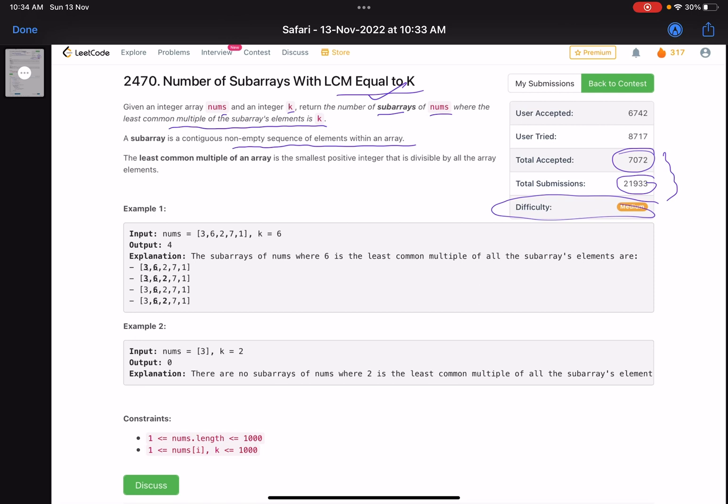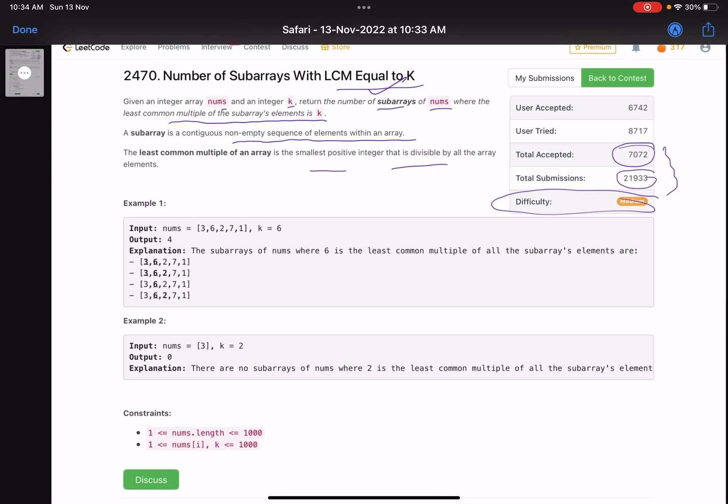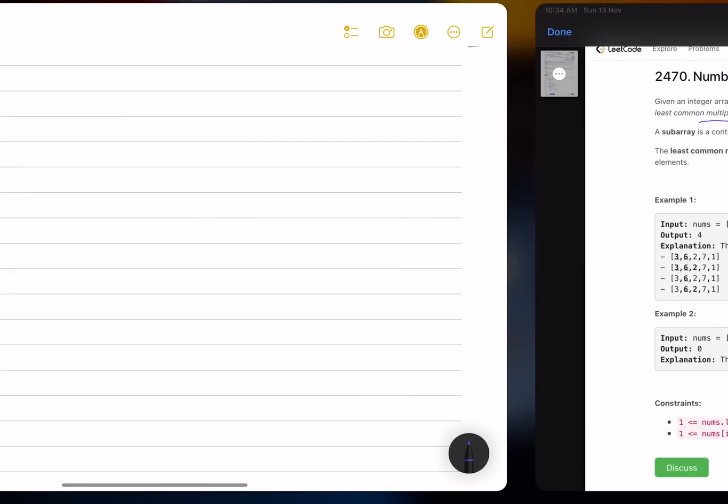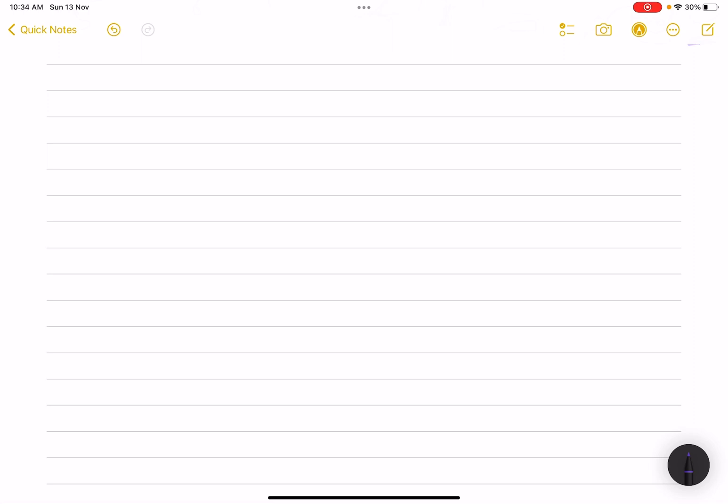The least common multiple of an array is the smallest possible integer that is divisible by all the array elements. We know what LCM and GCD are, but I'll explain them. Let's jump into what the problem is saying.